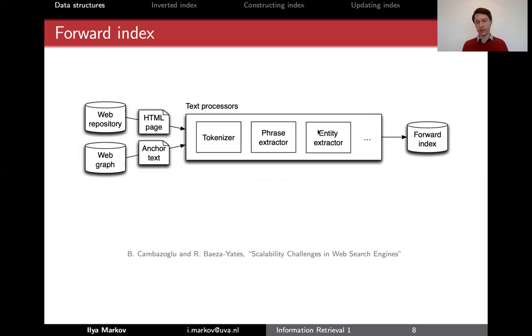You can add different other extractors like entity extractor and so on, and then you store it in a forward index, which means for every textual document you store all the word information about the document, all the words that occur, the frequencies and so on. Forward because it's from the document to its content, to its words.